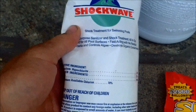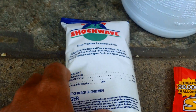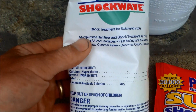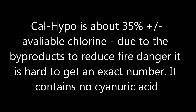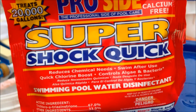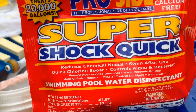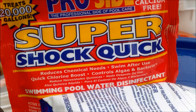Cal Hypo has 70% available chlorine, which means it has about 35% chlorine by weight of the product. The rest of the Cal Hypo is basically a sodium product. Trichlor and dichlor shock and dichlor granular will have a stabilizer as the other ingredient, whereas Cal Hypo and liquid chlorine don't have any stabilizer in them.